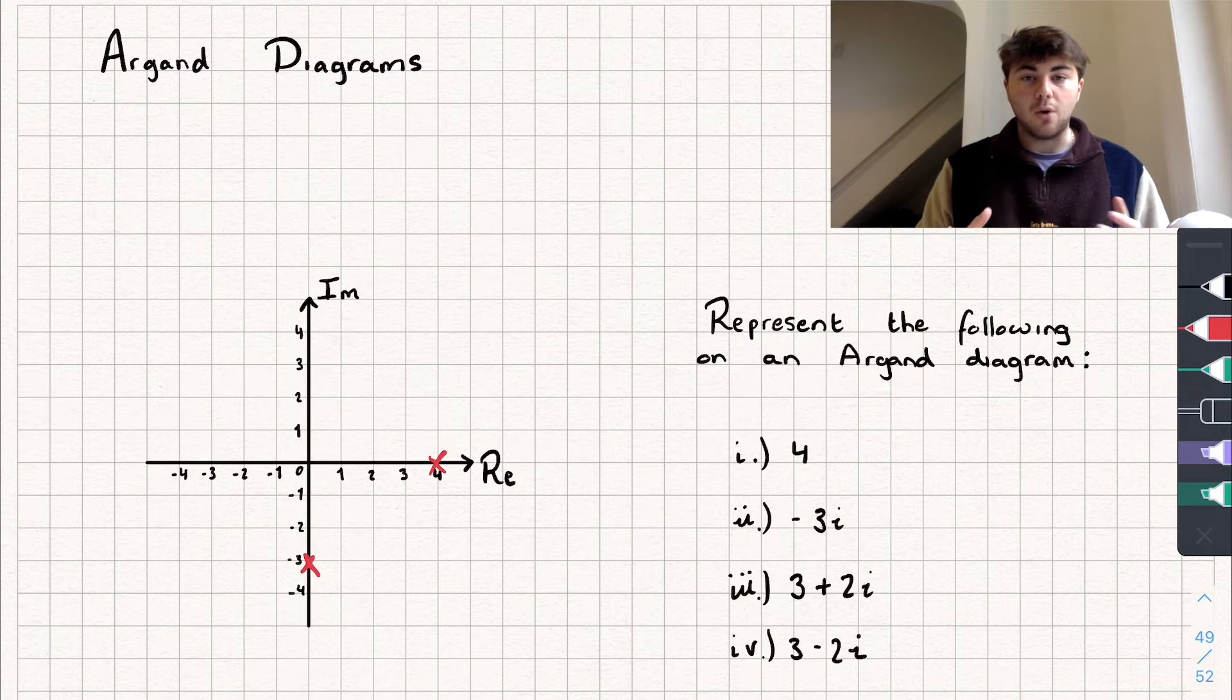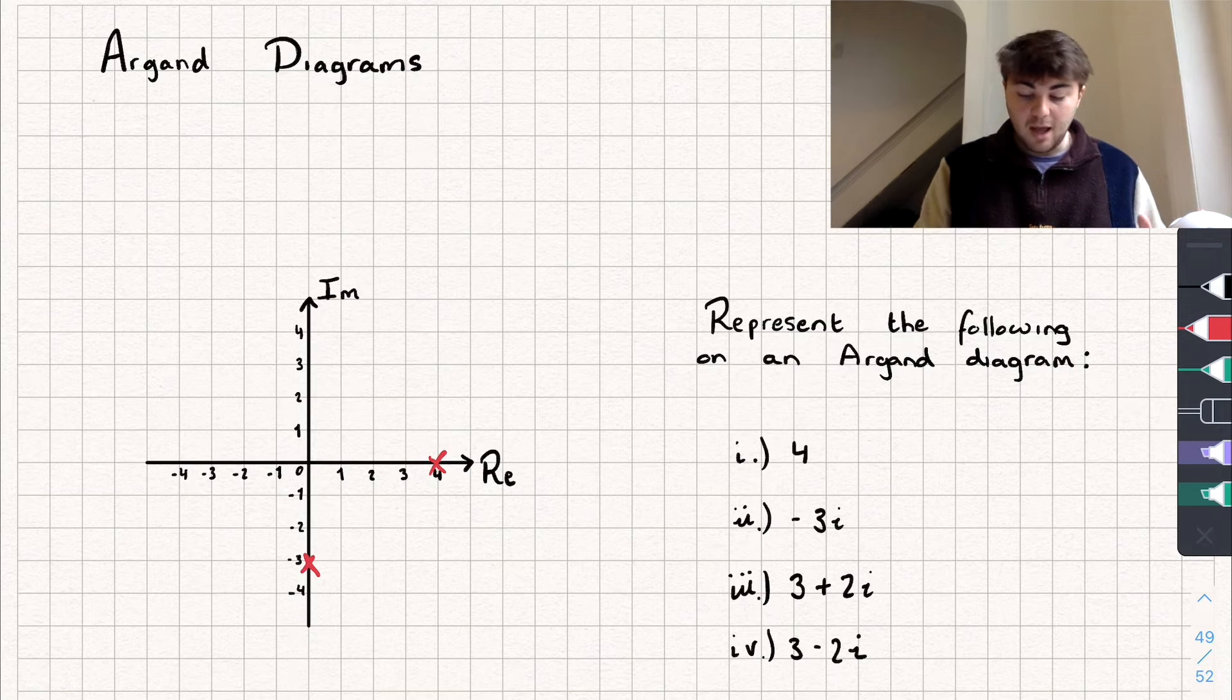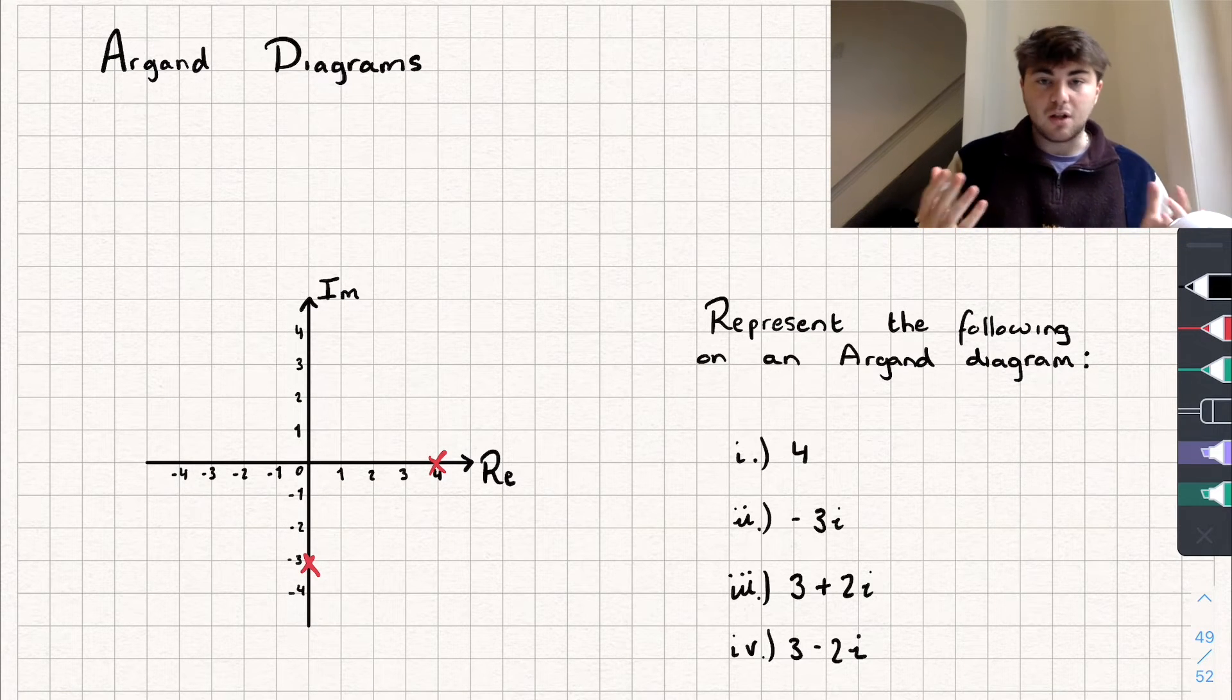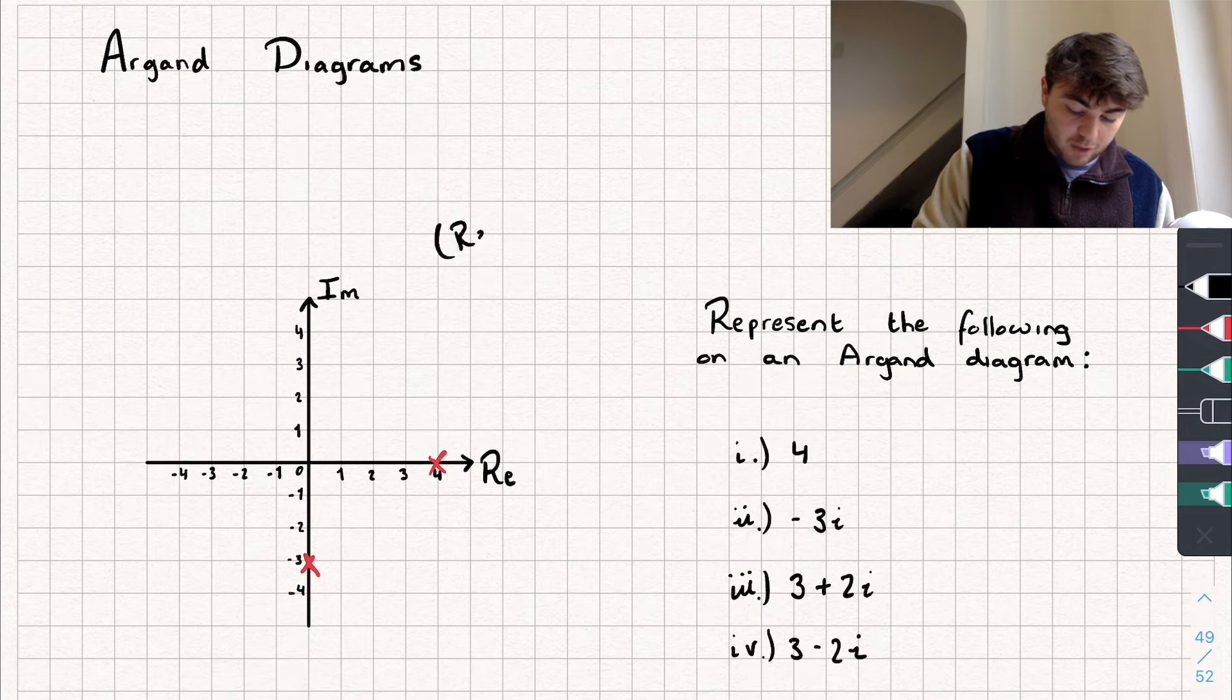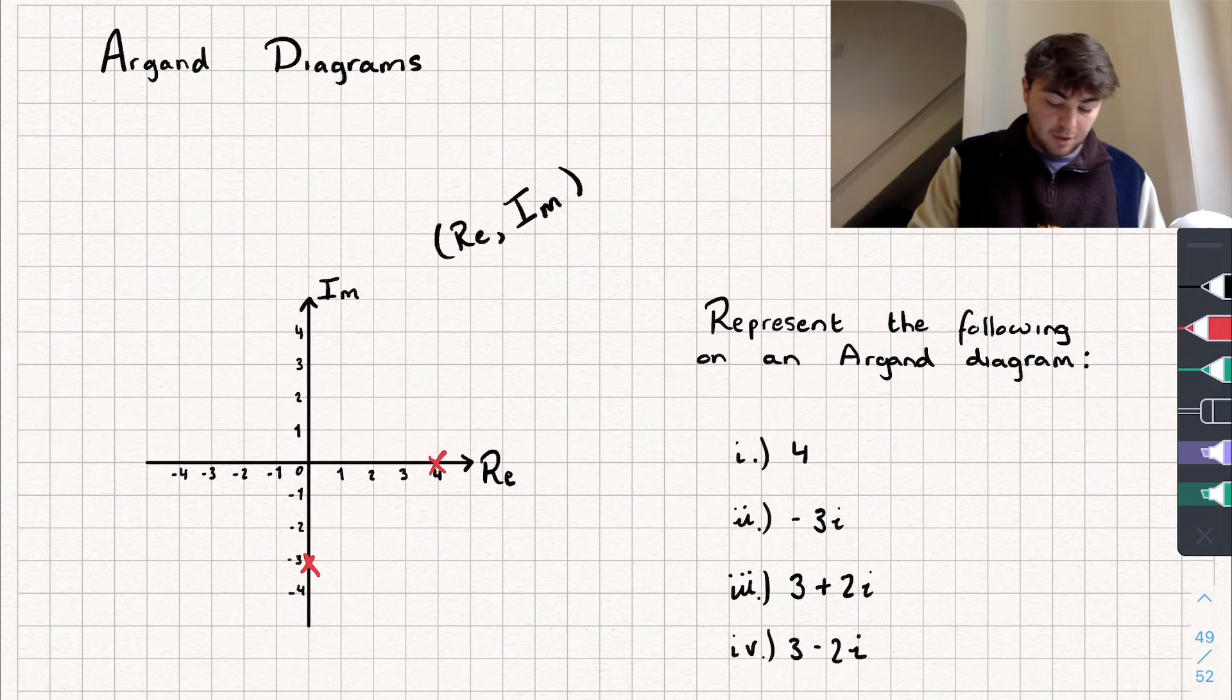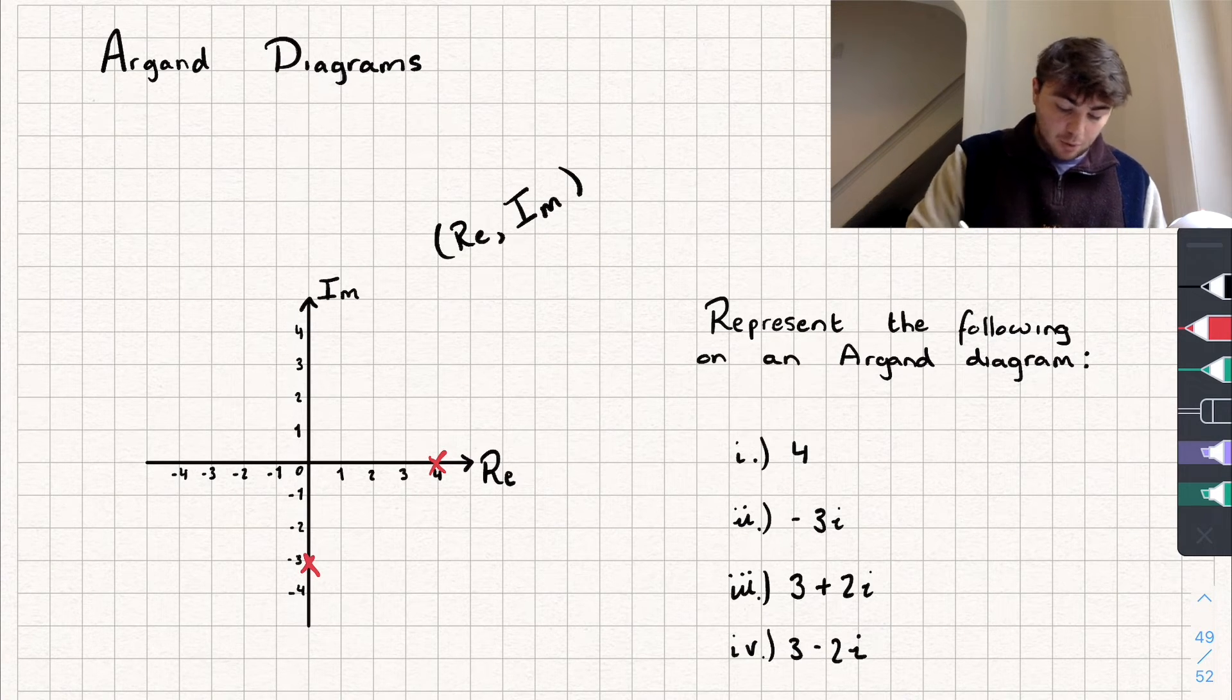And then we'll look at 3 plus 2i. So this is a complex number, and when we're representing complex numbers on the Argand Diagram, it's almost like coordinates. We'll have our real coordinate and then our imaginary coordinate. The point 3 plus 2i is going to be 3 along on the real axis and then 2 up on the imaginary axis, so that's going to be this point here.